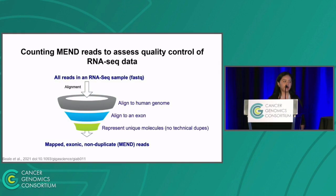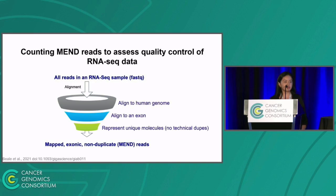To address the limitation of methods to assess the quality of RNA sequencing data, my lab uses a method where we count MEND reads. MEND stands for reads that are Mapped, Exonic, and Non-Duplicate. From our total pool of RNA sequencing reads, we filter for reads that align to the human genome, align to an exon — since we are focused on transcripts that will encode for proteins that can later be targeted — and represent unique molecules or non-technical duplicates. The deliverable is a subpopulation of your total reads that we believe reflect the integrity and quantity of RNA in your tumor, and indicate whether your data can be used for robust gene expression quantification.